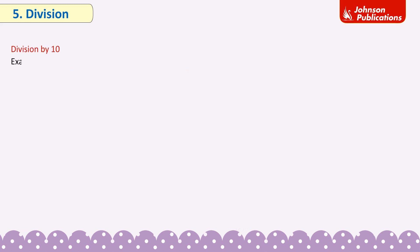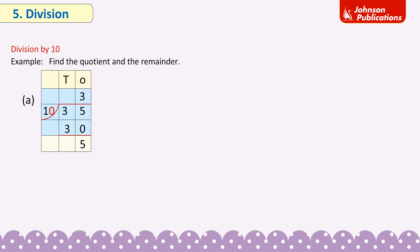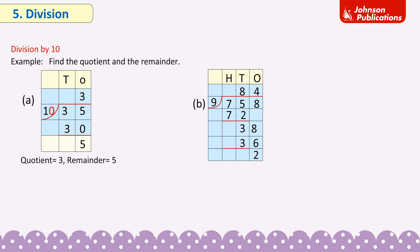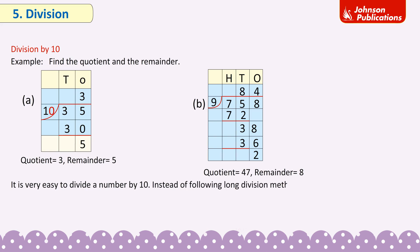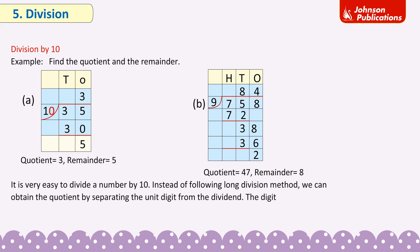Division by 10. Example — find the quotient and remainder. A: Quotient = 3, remainder = 5. B: Quotient = 47, remainder = 8. It is very easy to divide a number by 10. Instead of following the long division method, we can obtain the quotient by separating the units digit from the dividend. The digit in the ones place forms the remainder and the remaining digits form the quotient.